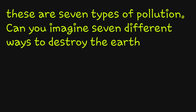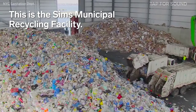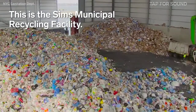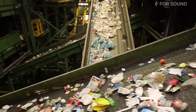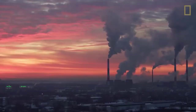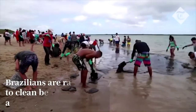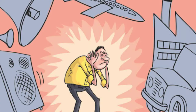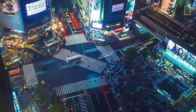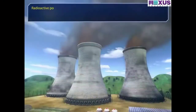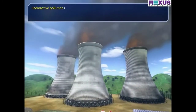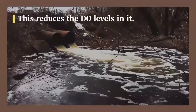There are seven types of pollution. Can you imagine seven different ways to destroy the earth? Here are all the types of pollution: land pollution, air pollution, water pollution, noise pollution, light pollution, radioactive pollution, and thermal pollution.